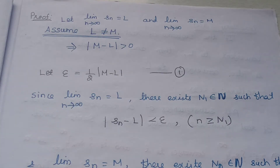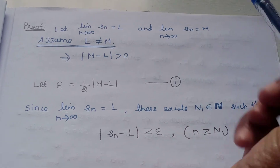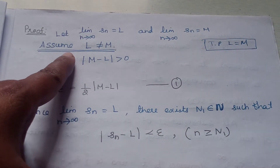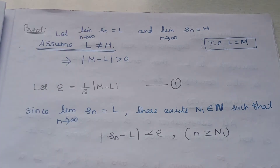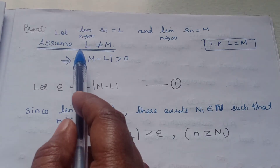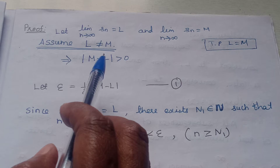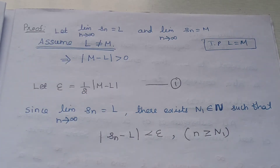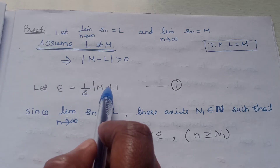Let Sn have two different limits. By definition, let the limit as n tends to infinity of Sn equal L, and also let the limit as n tends to infinity of Sn equal M. We need to prove that L equals M. So we assume the opposite: suppose L is not equal to M. We select epsilon equal to one half times the modulus of M minus L. This is equation 1.